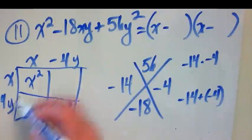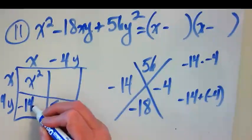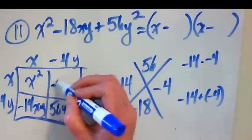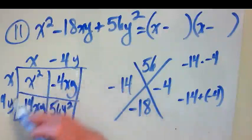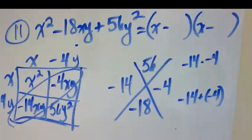This is going to be negative 14y times x. So I get negative 14xy. X times negative 4y would get me negative 4xy. And these two together, when I combine like terms, they do get me back to that negative 18.